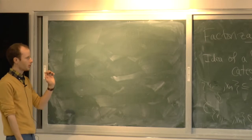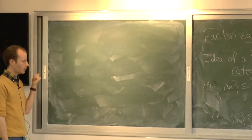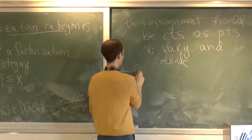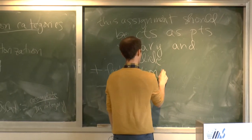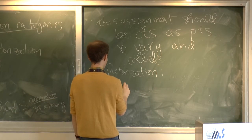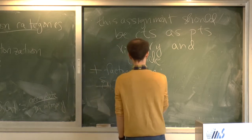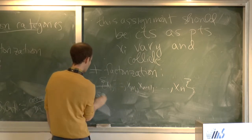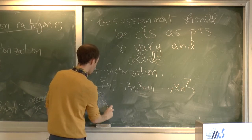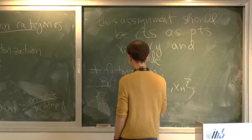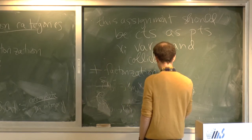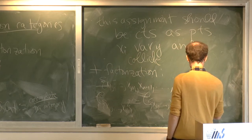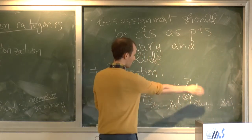And then there's the question of what are these things good for. One answer is pretty close to the answer for factorization algebras. I forgot a crucial thing: plus a factorization condition that says that if we have x_1 up to x_m, x_{m+1}, x_n—all different points—then what we should have is that the fiber of the category at the points x_1 up to x_n should be the tensor product, in the sense of co-complete DG categories, of the fibers at these two different sets of points.